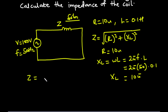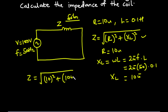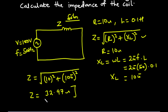So Z equals the square root of 10 squared plus (10 pi) squared. The square root evaluates to 32.97 ohms. So this is the impedance of the coil.